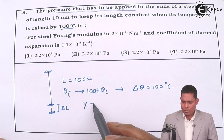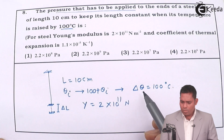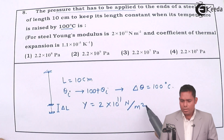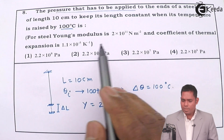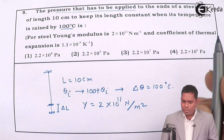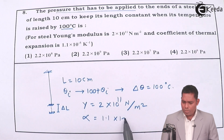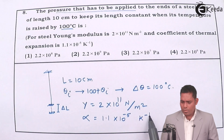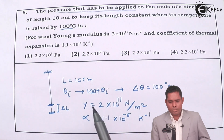The data given is: Young's modulus Y = 2×10¹¹ N/m², and the coefficient of linear (thermal) expansion α = 1.1×10⁻⁵ per kelvin.